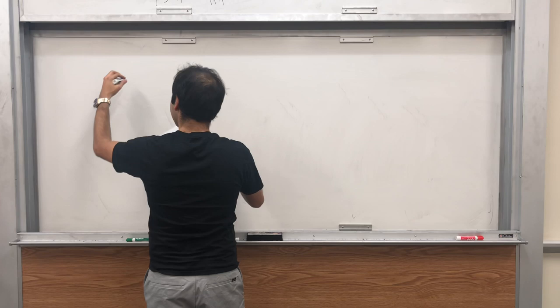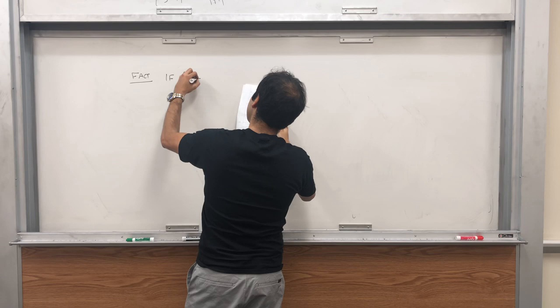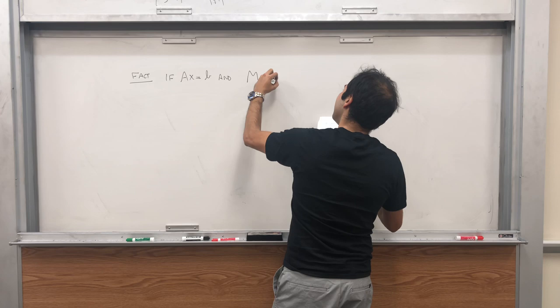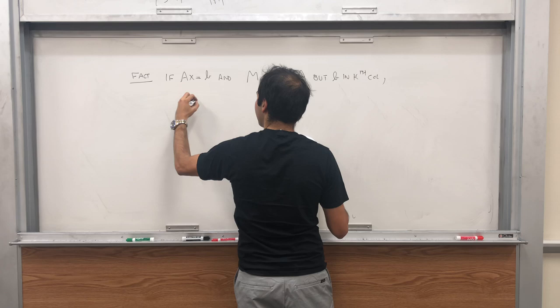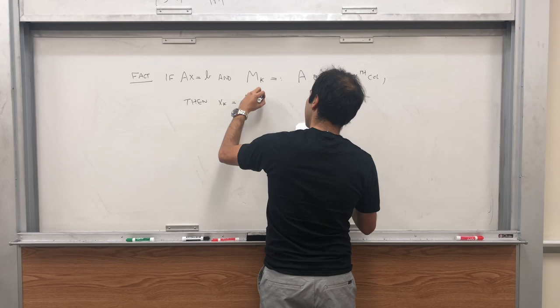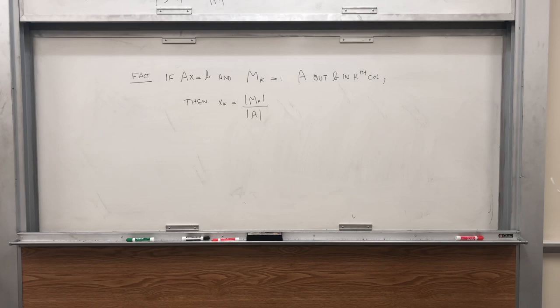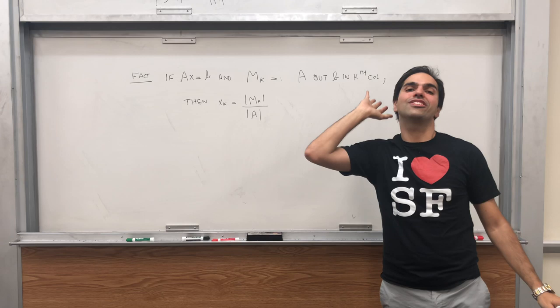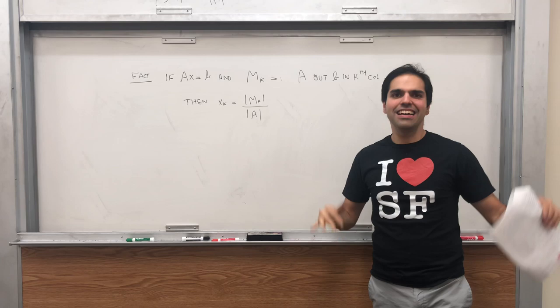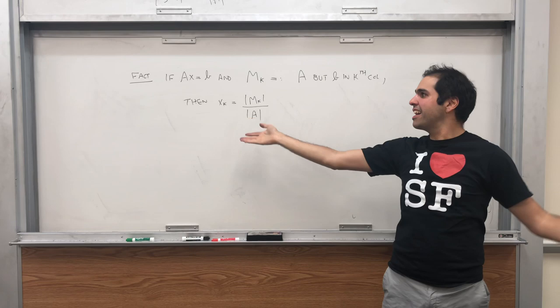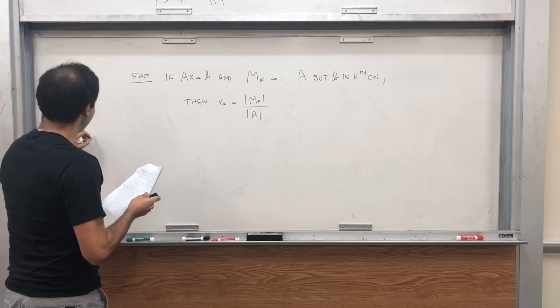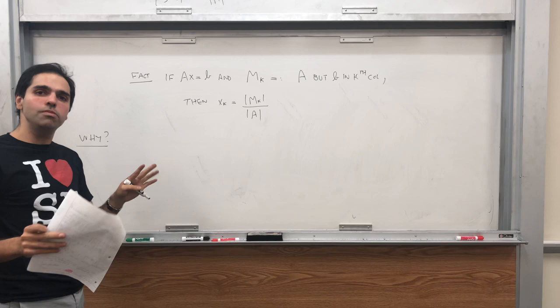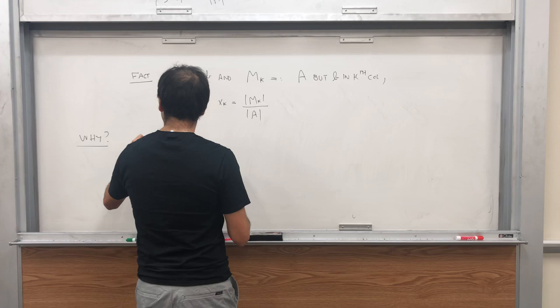So let me now just state this as a fact. If Ax = b, and we define Mk to be A but b in k column, then indeed we have that xk is the determinant of Mk over the determinant of A. Very elegant result, and I think the proof is just magical, because I will give you several pieces that seem not to make sense, but at the end you will see that this formula just flows out like butter. It's very tasty, and kind of healthy too, actually better than butter.